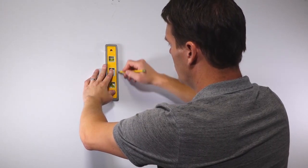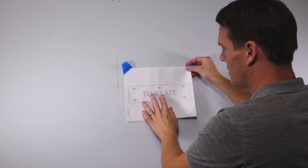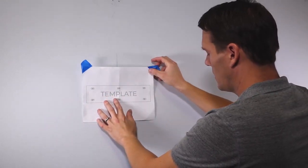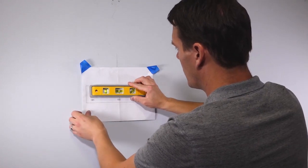Locate stud within the wall you intend to hang your reflect on and mark with a pencil. Level and tape up the wall mount template with the middle two holes centered over stud.